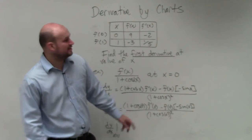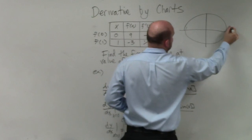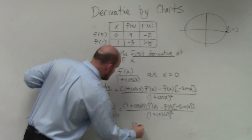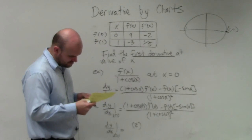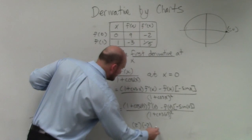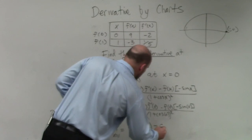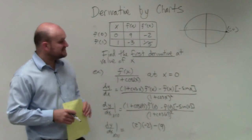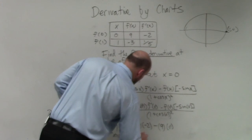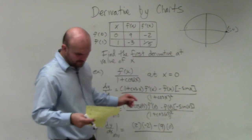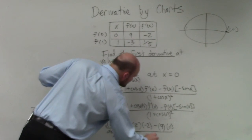Cosine of 0 — if you think about that on the unit circle, cosine of 0 is at the point 1 comma 0, so that's 1. So 1 plus 1 is 2. f prime of 0, from the table, is negative 2. Then f of 0 is 9. Negative sine of 0: the sine value at 0 is 0, so negative 0 is still 0. The denominator is 1 plus cosine of 0, which is 1 again, so 1 plus 1 is 2, and 2 squared is 4.